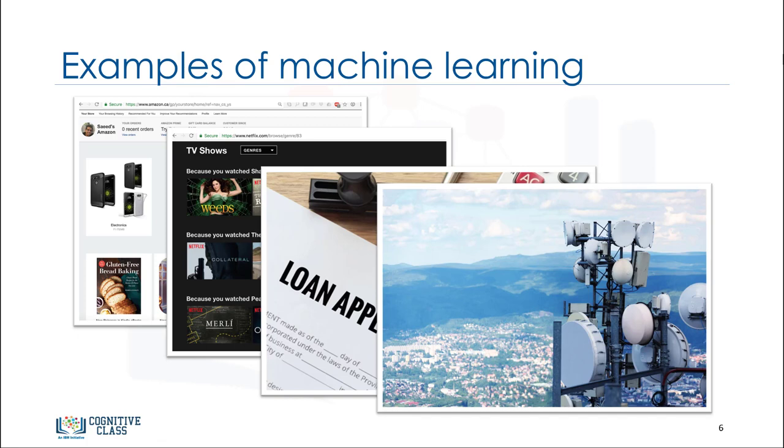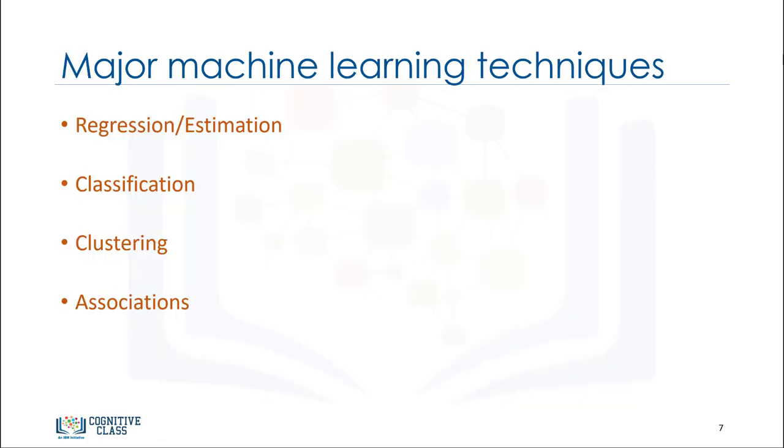Each of these use different machine learning techniques and algorithms. So let's quickly examine a few of the more popular techniques. The regression estimation technique is used for predicting a continuous value, for example, predicting things like the price of a house based on its characteristics, or to estimate the CO2 emission from a car's engine.